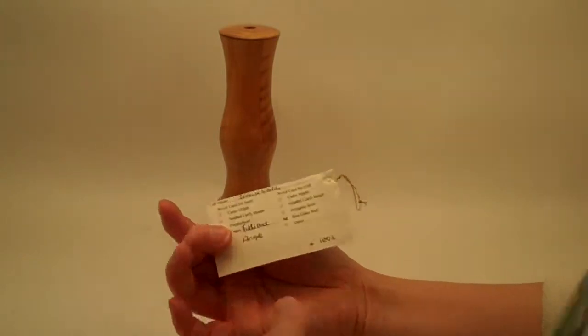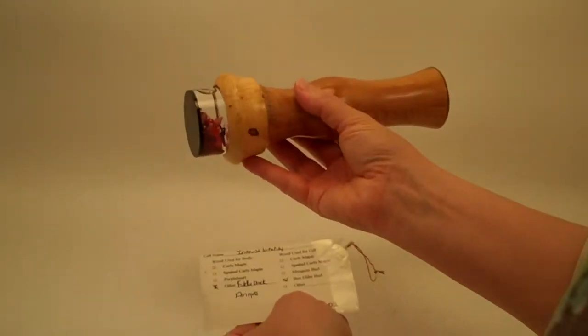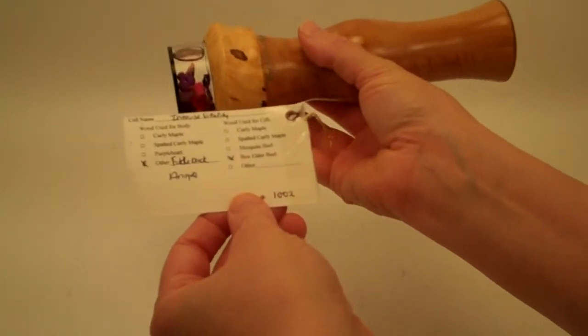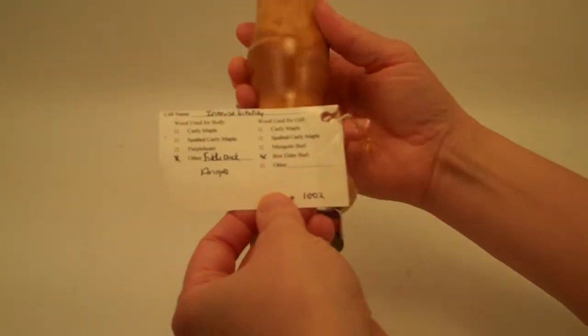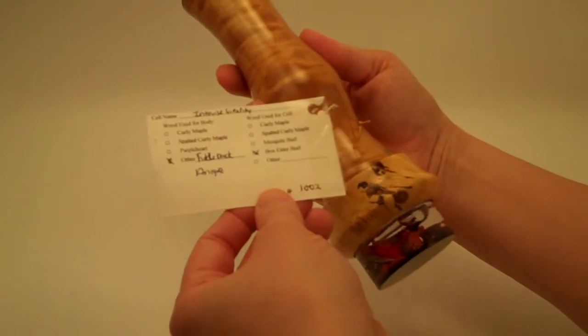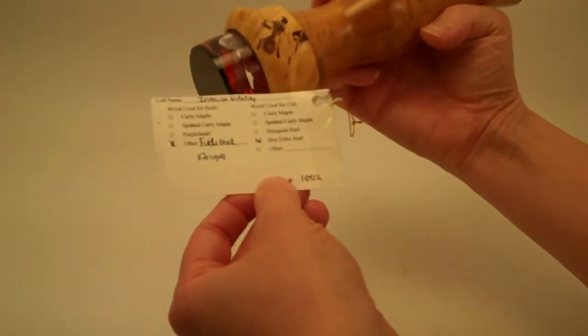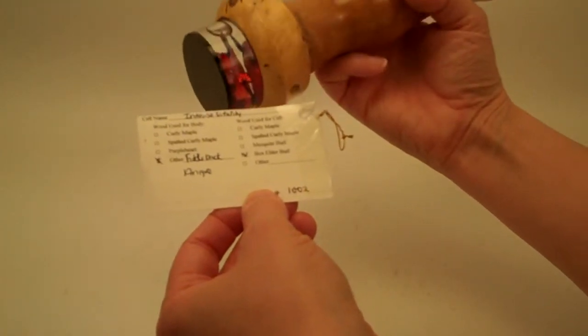The cell, which is their recipe for the colors inside, is Intense Vitality. The wood used on the body of the kaleidoscope is Fiddleback Antigree and the wood used on the object cell is Box Elder Burl Wood.